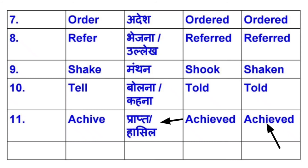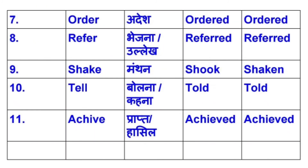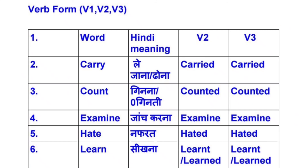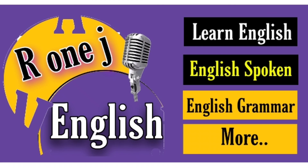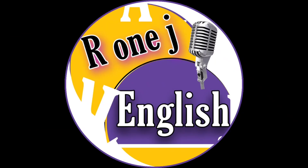तो यह थीं some important verb forms जो कि आपको याद करना है, क्योंकि verb form बहुत ही ज़्यादा important है। V1, V2, V3 याद होना चाहिए — अगर आपको याद रहेगा तो आप easily sentence बना सकते हैं, spoken में use कर सकते हैं, written English में भी। V4 में ING लगता है और V5 में S या ES लगता है। मैं next video में और भी important word forms बताऊंगी — 300 verb forms complete करना है। Link description box में दे दूँगी। Grammar और spoken related कोई भी help चाहिए तो मेरे channel पर बने रहें — हर एक problem का solution मेरे video पर मिल जाएगा।